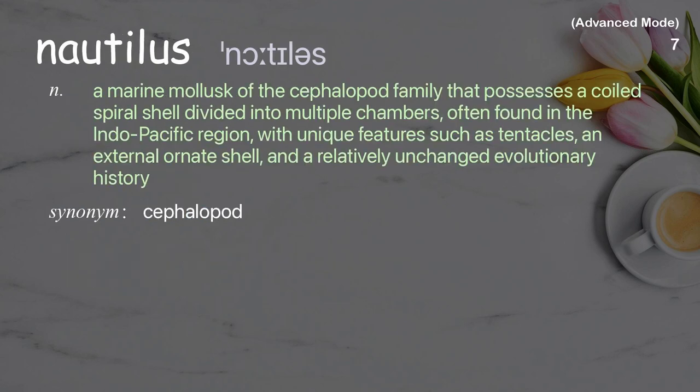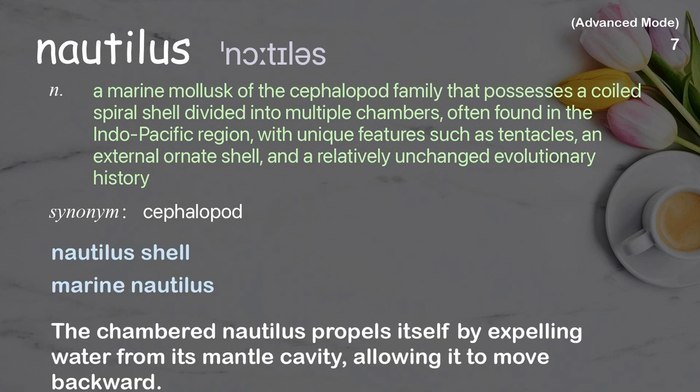Nautilus: A marine mollusk of the cephalopod family that possesses a coiled spiral shell, divided into multiple chambers, often found in the Indo-Pacific region, with unique features such as tentacles, an external ornate shell, and a relatively unchanged evolutionary history. Examples: nautilus shell, marine nautilus. The chambered nautilus propels itself by expelling water from its mantle cavity, allowing it to move backward.